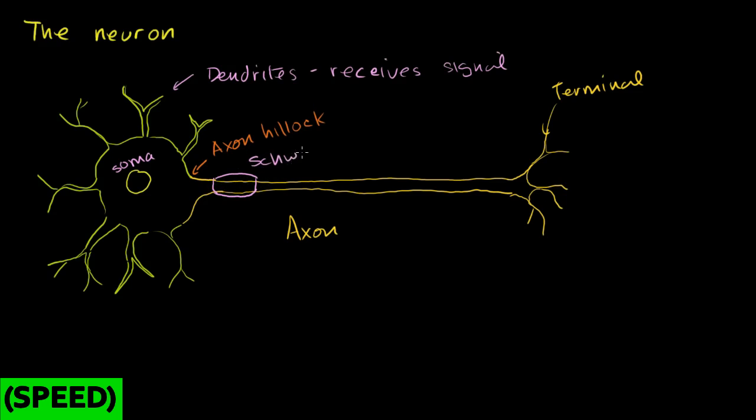So these are called Schwann cells. Schwann cells, and they're covering, they make up the myelin sheath. So this covering, this insulation at different intervals around the axon, this is called the myelin sheath. So Schwann cells make up the myelin sheath.